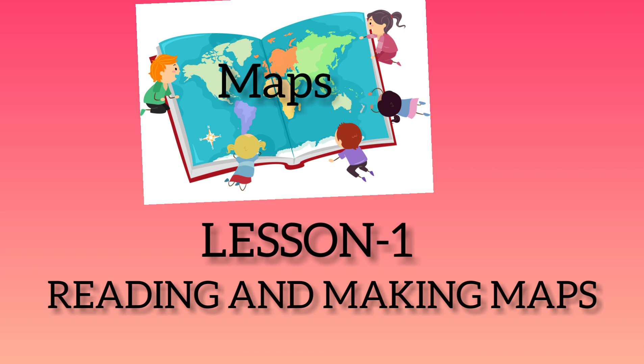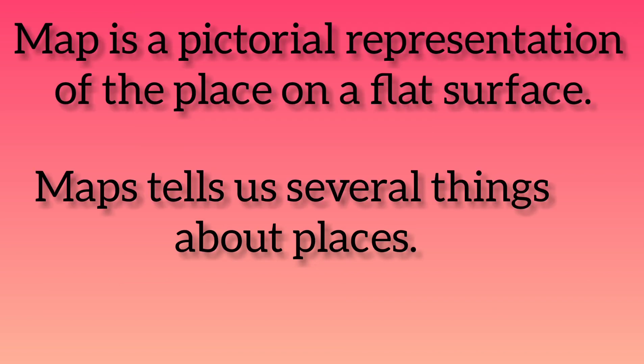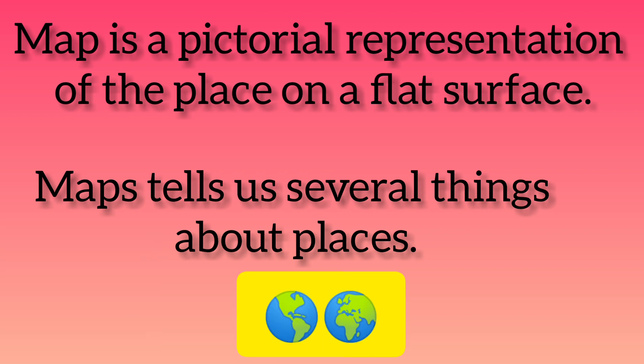Children, I think you might have understood what we are going to learn. We are going to learn about maps — how we make maps and how we read the map. Before going to the topic, we shall discuss the definition of a map. A map is a pictorial representation of a place on a flat surface. We represent a place, country, or something on a piece of paper — on a flat surface. You know that the shape of the earth is like a ball or sphere, so we are representing that circular form on a flat surface in the form of a map.